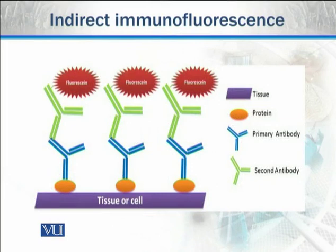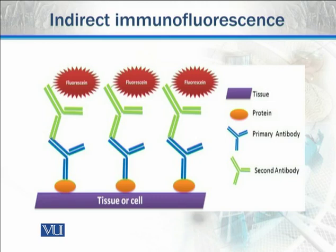Here the principle of indirect immunofluorescence is shown. We can see the tissue and the cell at the bottom. Different types of proteins are shown in yellow color. The primary antibodies, which are unlabeled, are shown in blue color. These are then stained with labeled secondary antibodies shown in green color, which have red fluorescein attached to them.